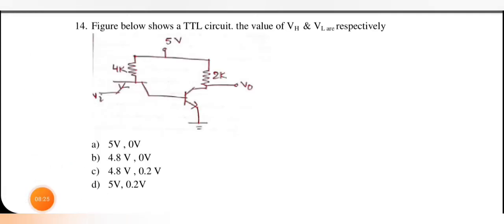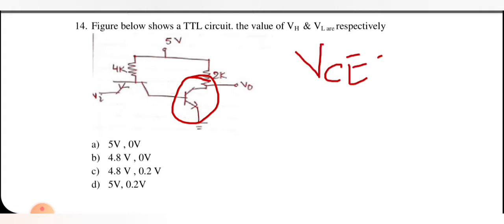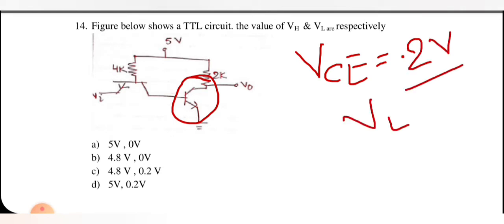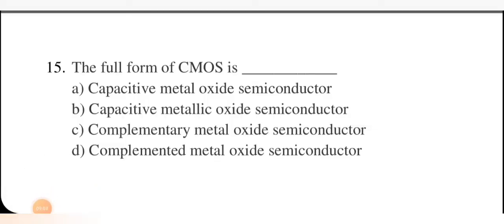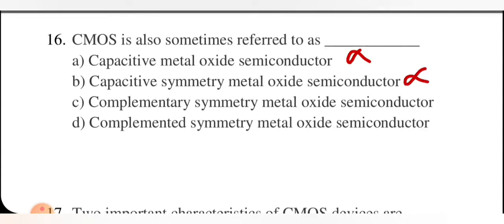The figure shows a TTL circuit. The values of V_H and V_L — V_H means high voltage and V_L means low voltage. We will get low voltage at the output when the transistor is on and in saturation. If it goes into saturation, the collector-emitter voltage is 0.2 volt, meaning V_L equals 0.2 volt.